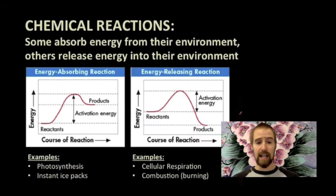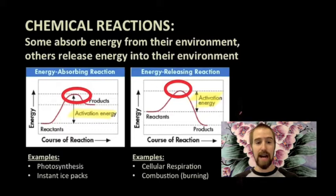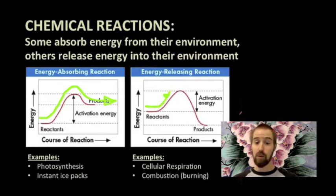All chemical reactions require some input of energy to get started, and this energy is called the activation energy. In each of these graphs, this big hump in the middle represents that activation energy, and the reaction won't begin until we give it enough energy to get over the hump — kind of like rolling a ball up a hill. If we roll the ball fast enough, it will easily make it to the top of the hill and continue rolling down the other side. If we roll it slower, it may not make it all the way up and may just roll back down.